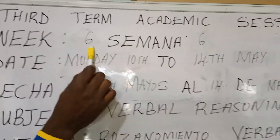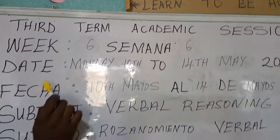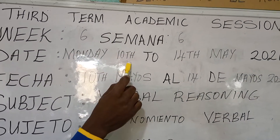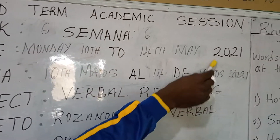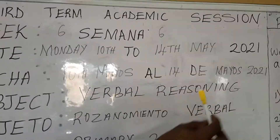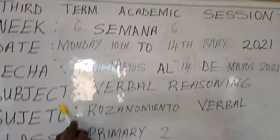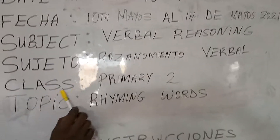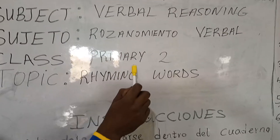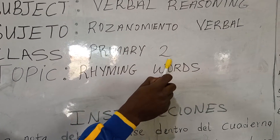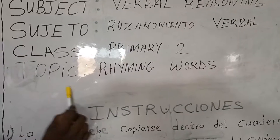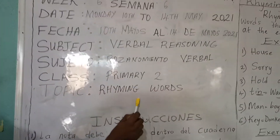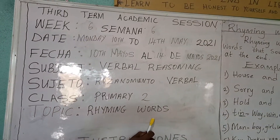On week 6, day of today is Monday, the 10th of May 2021. Our subject is verbal reasoning. Class is Primary 2. Our topic is rhyming words.